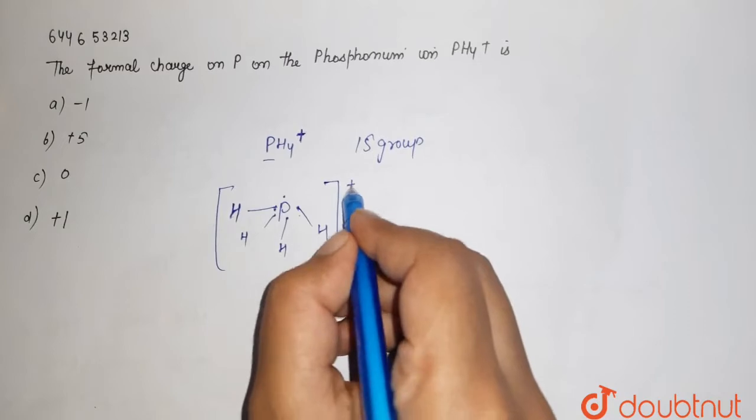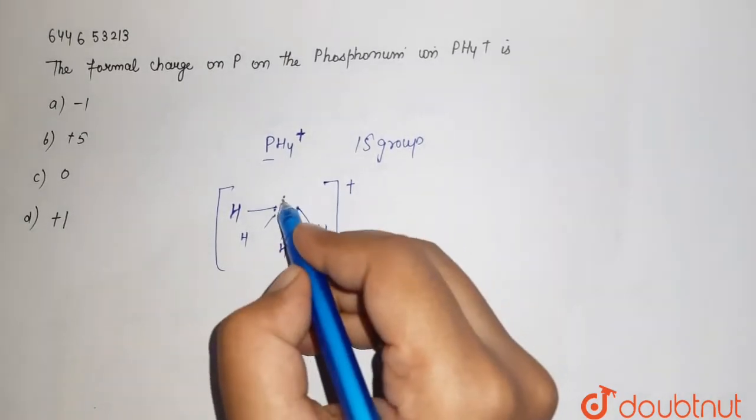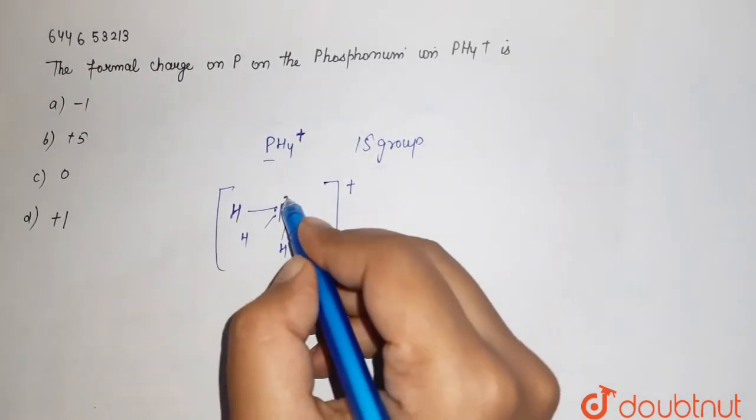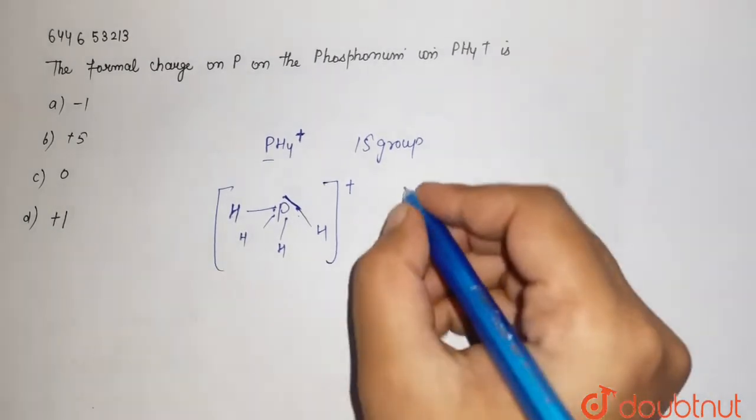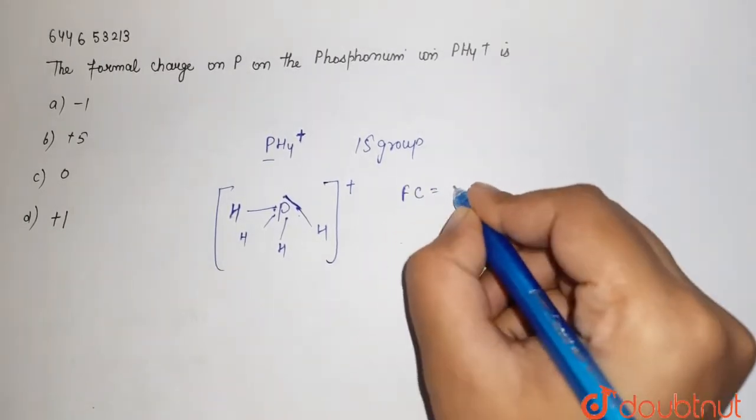Now if you see this, it has lost one so it does not have the five valency, so its structure is like this. Talking about formal charge, it can be calculated by valence electrons minus number of lone pair electrons plus half of the bonded electrons.